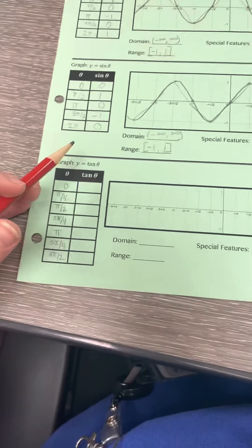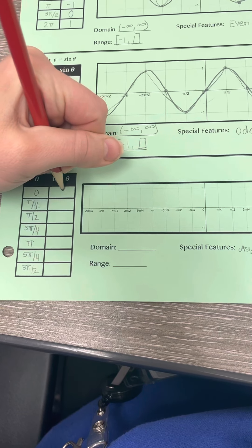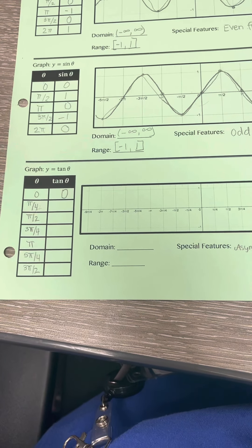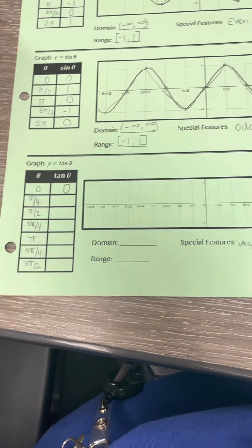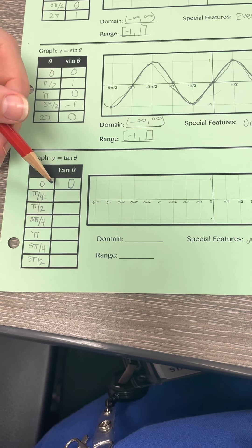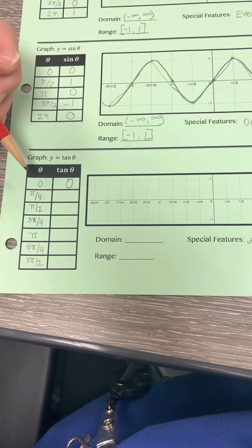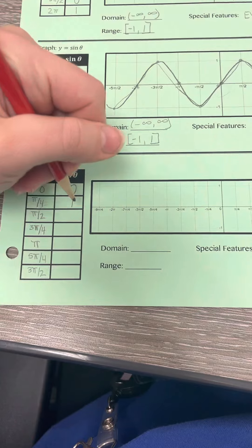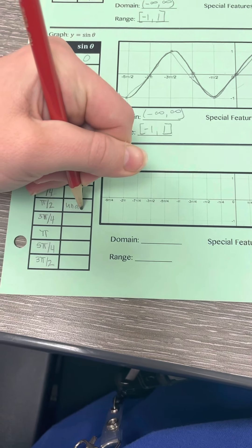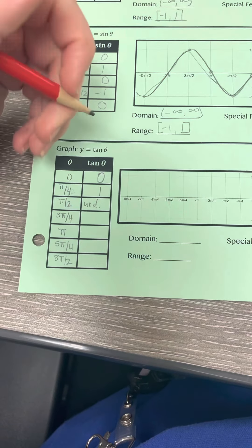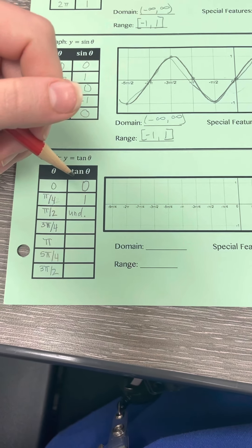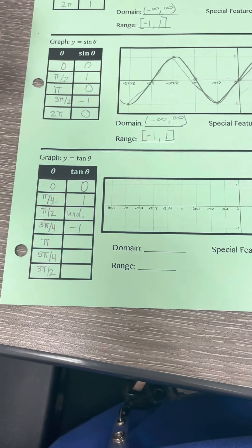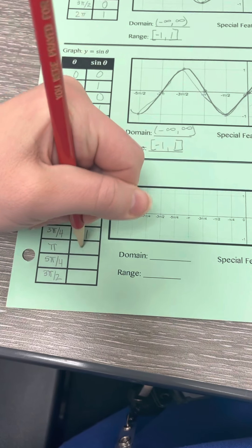We're going to start at zero for tangent, which is going to be zero. Remember when we're calculating tangent, it is y over x. So for zero it would be zero over one, which is just zero. For pi over four, you would have square root of two over two over the square root of two over two, which gives us just one. Pi over two would be one over zero, which is undefined. Three pi over four gives us positive square root of two over two over negative square root of two over two, so that's negative one. And then for pi, we have zero over negative one, which is just zero.